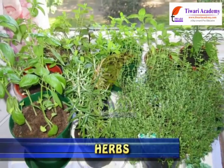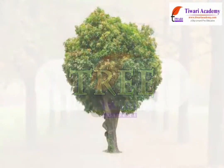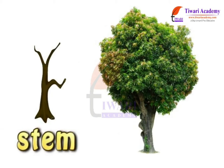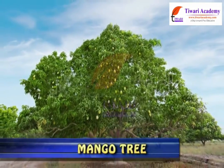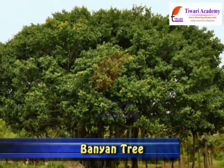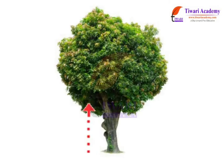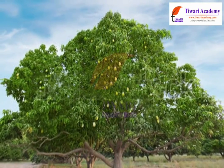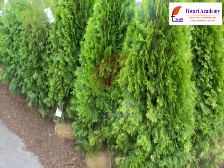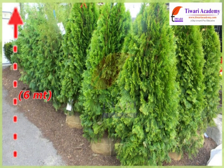In the previous module, we learnt about herbs and shrubs. Come, let us learn about trees. Trees are those plants which are very tall. They have thick, brown and hard stems. Examples are mango, neem, peepal, banyan, etc. Usually in trees, branching starts in the upper part of the stem, much above the ground. A tree is a tall perennial woody plant having a main trunk and branches forming a distinct elevated crown. A shrub is distinguished from a tree by its multiple stems and shorter height, usually under 6 meters or 20 feet tall.